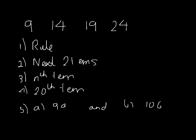Okay, so what's the rule? The rule clearly is add 5 each time. What's the next two terms then? Well, therefore, the next one is 29, and the one after that would be 34. So we've done that.